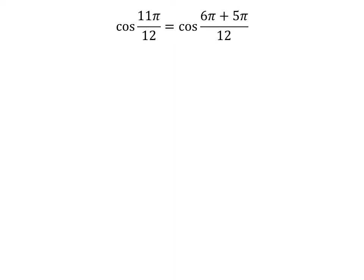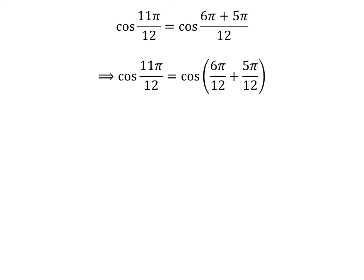11 times pi is equal to 6 times pi plus 5 times pi. So, cosine of 11 times pi upon 12 is equal to cosine of 6 times pi plus 5 times pi upon 12. The fraction can be written as the sum of two fractions. So, cosine of 11 times pi upon 12 is equal to cosine of 6 times pi upon 12 plus 5 times pi upon 12.